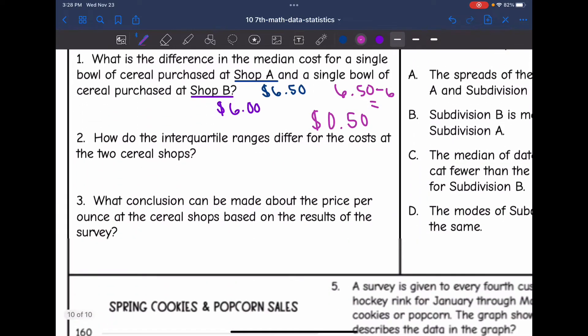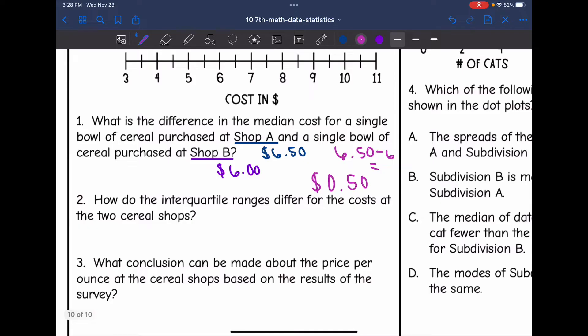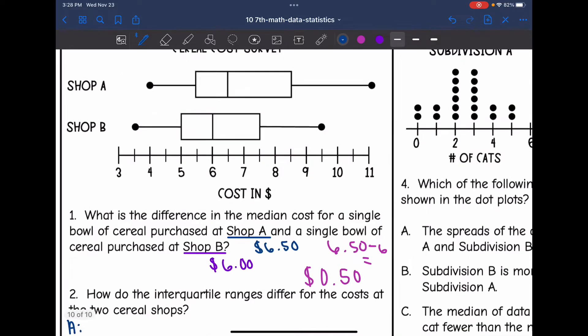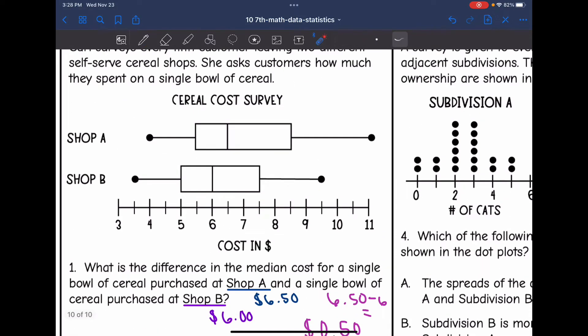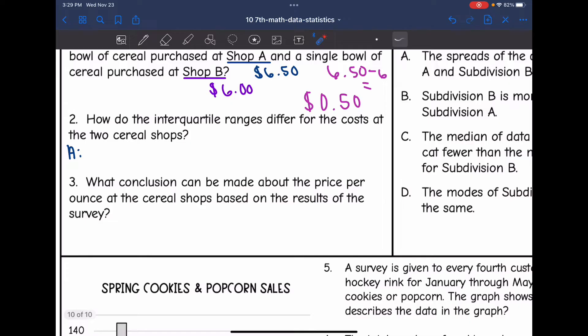Let's look at number two. It says, how do the interquartile ranges differ for the cost at the two different cereal shops? So I need to find the IQR of both of these. Let's start with Shop A. Q3 for Shop A is 8.5 and Q1 is 5.5. So I would do 8.5 minus 5.5, which is 3. That's the IQR for Shop A.